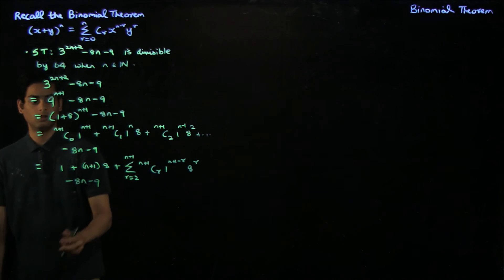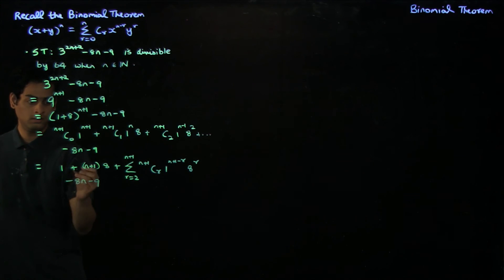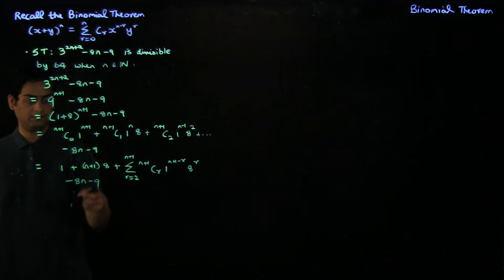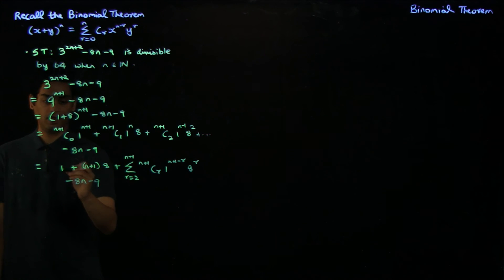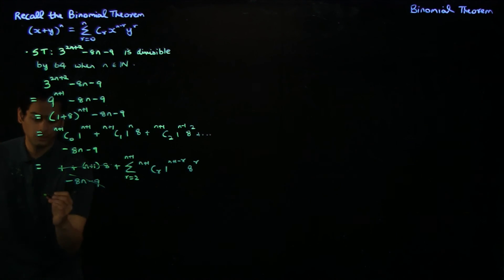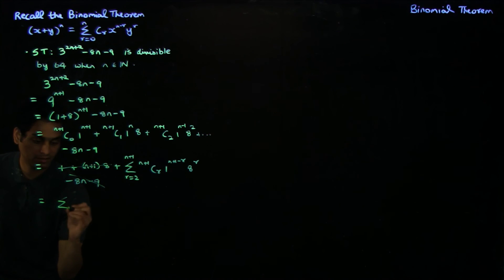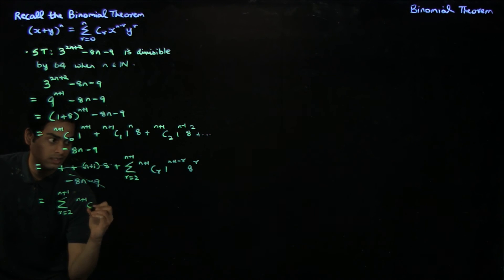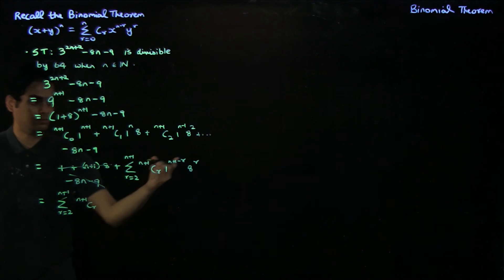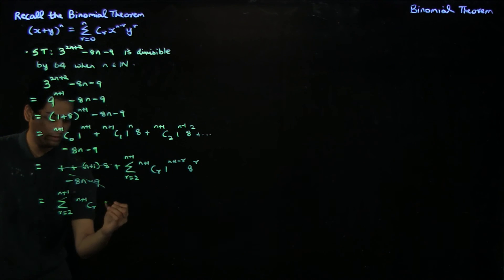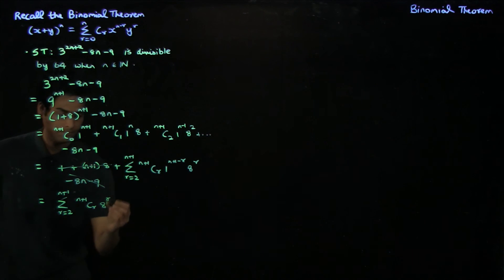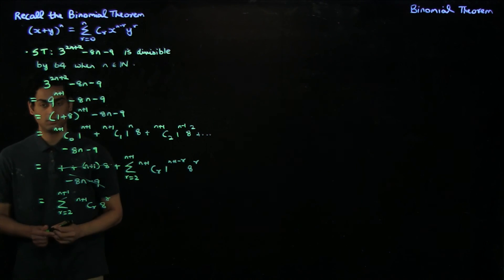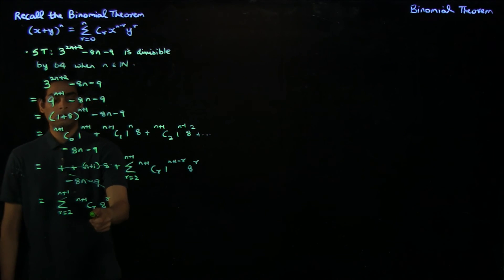This looks a little more promising because notice that these first two terms add up to exactly 8n plus 9, and so you can cancel these two terms. You are just left with summation r equal to 2 to n plus 1 of (n+1)Cr times 1 power n plus 1 minus r, which is just 1, times 8 power r. This is what we're left with, and we want to show that this is divisible by 64.